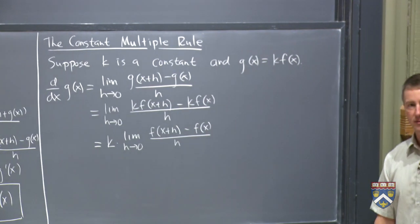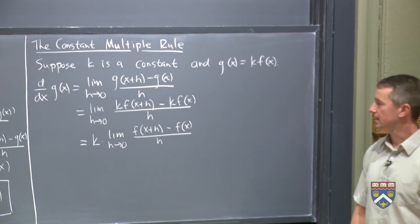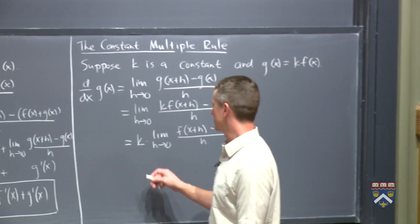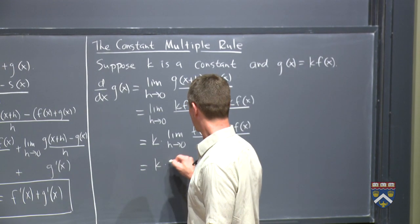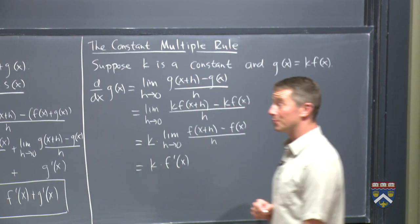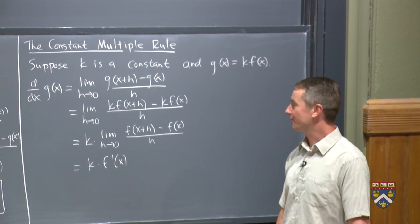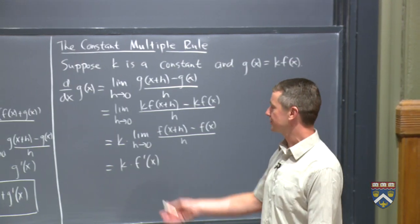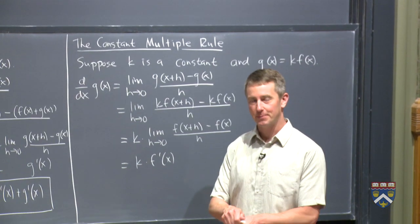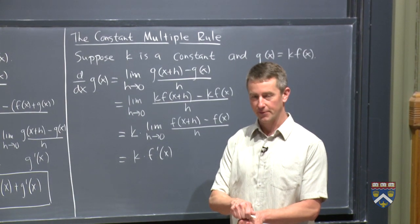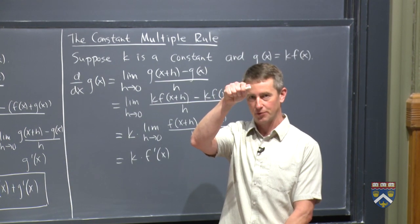And now there we have something that we recognize. Because this is f prime of x. So is that the rule that you conjectured by playing with the applet? That for example, if you take a function and you multiply it by three,